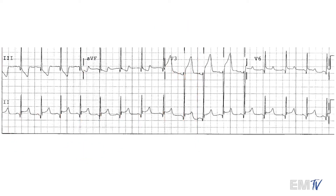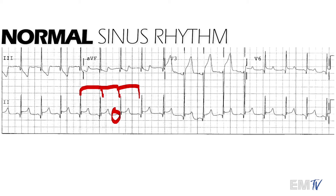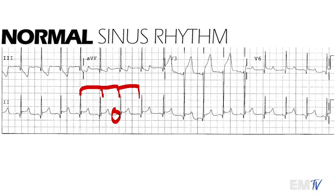Let's go ahead and identify the rhythm. We'll examine one of these complexes: there's a P wave, a nice narrow QRS, and the R-to-R interval is consistent and regular. Because this heart rate is 95 BPM, I would diagnose this as normal sinus rhythm. But remember, because this is a 12-lead, we're going to have to identify potentially something more malignant than just the rhythm itself.